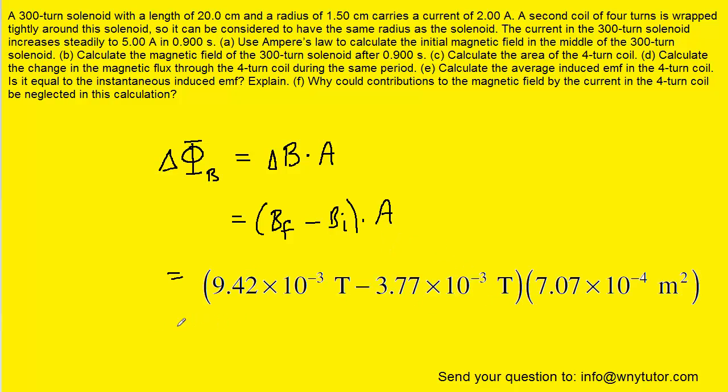When we crunch it down, we get approximately 3.99 times 10 to the minus 6. And then the standard unit of magnetic flux is the Weber. This would be the correct answer to part D of the question.